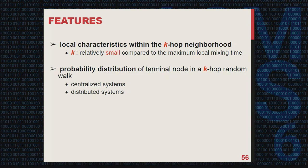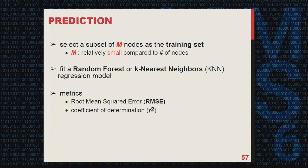More formally, we use the probability distribution of terminal nodes in a k-hop random walk as features, where k is relatively small compared to the maximum local mixing time. A small random subset of M nodes is selected as the training set. We fit a random forest regression model using these features and training samples. To evaluate the model, we use two metrics: root mean squared error (RMSE) and coefficient of determination R-squared. These measure the difference and correlation between predicted and original values — higher R-squared and lower RMSE indicate better prediction.